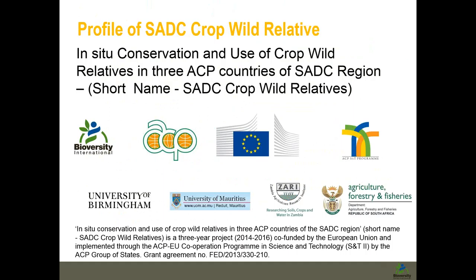The SADC Crop Wild Relative Project is co-funded by the European Union and implemented through the ACP-EU Cooperation Program in Science and Technology by the ACP Group of States. It is held across the SADC region but focused on three countries: Mauritius, South Africa, and Zambia. Our partners include the University of Birmingham providing technical backstopping, the University of Mauritius, the Zambia Agricultural Research Institute, and the Department of Agriculture, Forestry, and Fisheries in South Africa.